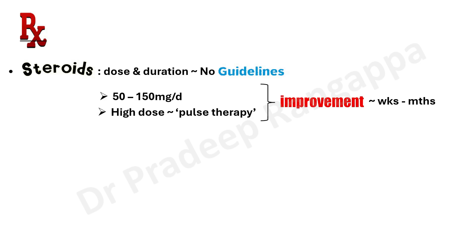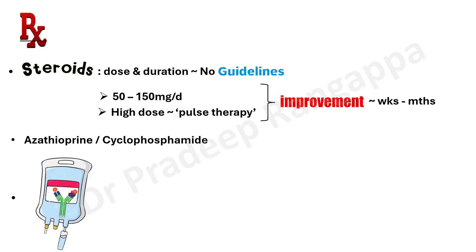Unfortunately, improvement tends to happen slowly — it takes weeks to months, not dramatically. Azathioprine and cyclophosphamide and other immunosuppressive agents have also been used to treat Hashimoto's encephalopathy. IVIG has also been used as a desperate measure. However, there is no clear algorithm or guidelines suggesting when these second- or third-line agents should be used, and most decisions are determined by clinical expertise.